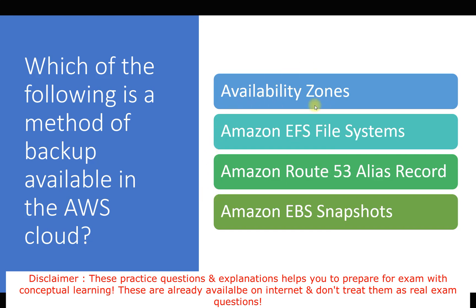Let's go through the options one by one. Availability zone is part of the AWS global infrastructure which provides high availability and fault tolerance. It helps when there is any issue with a data center, but it is not actually a backup solution — we are looking for a backup solution here, so availability zone is not correct.